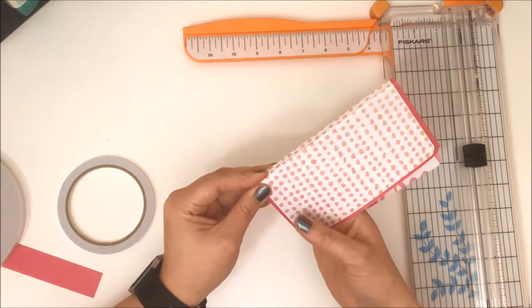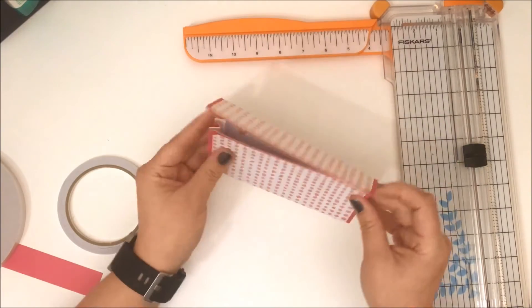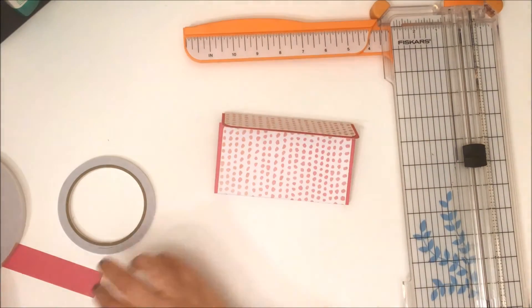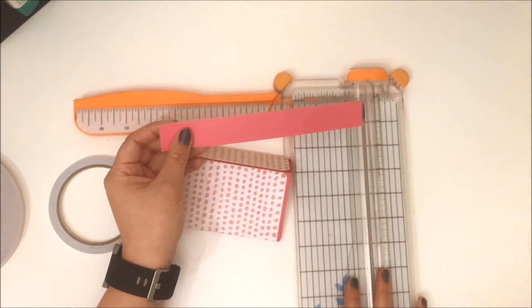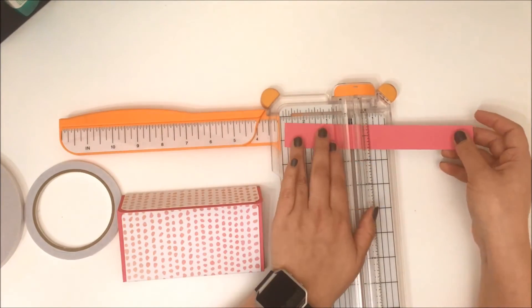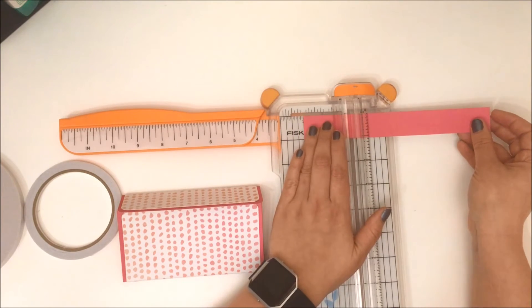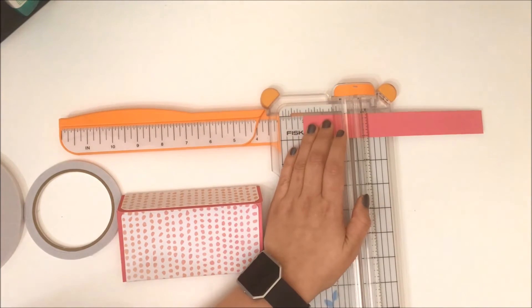And that is done. So that is the bulk of the wallet done. Now you could do lots of different ways to close the wallet. I tried a couple of things. If you had some magnets, that would work really well. I personally did a belly band.